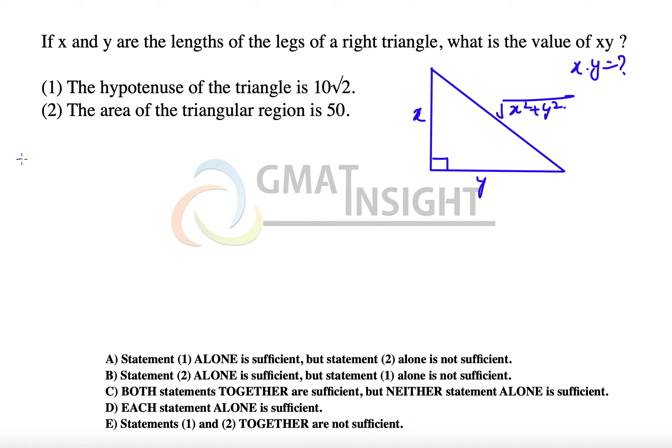Let's check the first statement. The first statement says that the hypotenuse of the triangle is 10√2, which means √(x² + y²) = 10√2. That means we understand that x² + y² = 200.